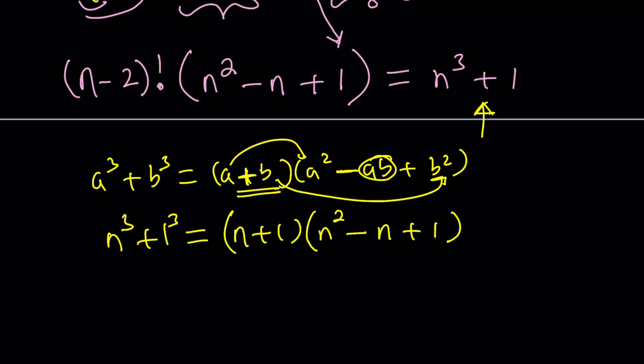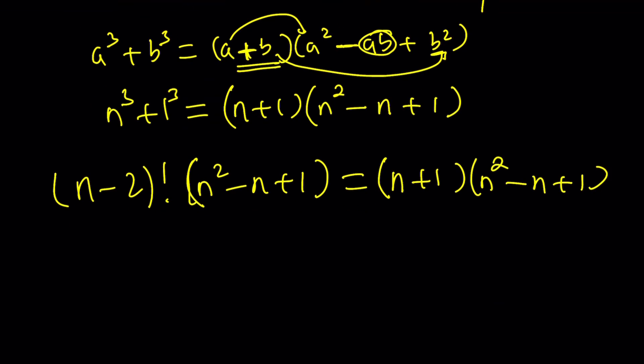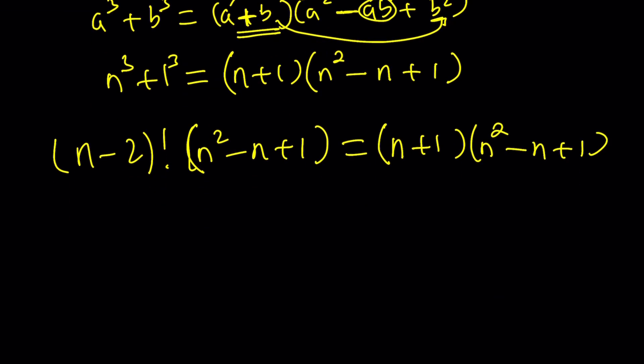Now, I noticed that n squared minus n plus 1 pops up again. Great. Left hand side is the same. That British accent. n squared minus n plus 1 equals, and now we have n plus 1 times n squared minus n plus 1. Awesome. I got the same factor. I could put everything on the same side and factor it. No, no, no. You don't really need that. There's an easy way to do it.